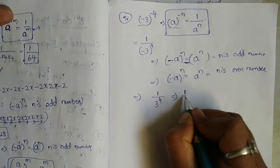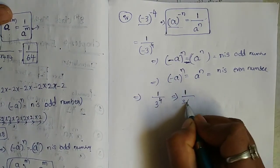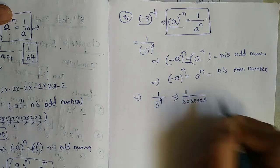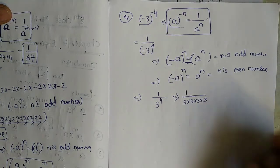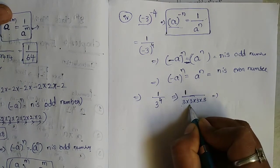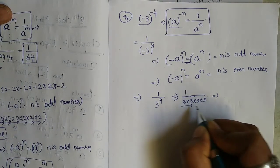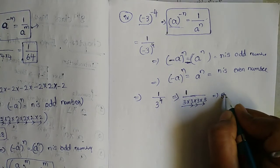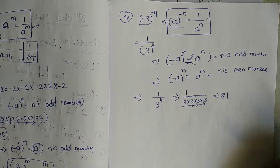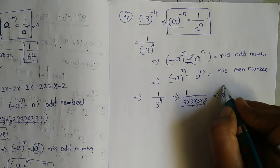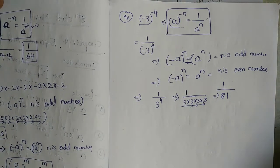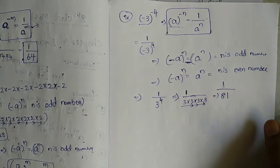So 1 by 3 to the power of 4. Expanding: 3 into 3 into 3 into 3 four times. 3 into 3 is 9, 9 into 3 is 27, 27 into 3 is 81. So the answer is 1 by 81.